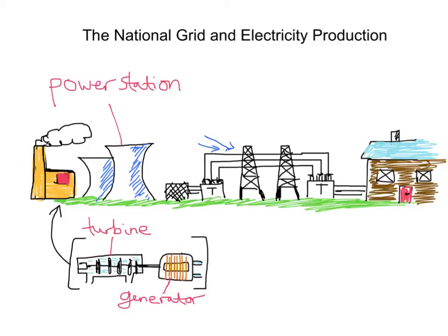Important to note: electricity is supplied to consumers — you and I — through this national grid, but it's done at a very high voltage, and that's to reduce energy losses during transmission. Going from the power station, our point of origin, to our home, we could lose a lot of energy during that transmission. So we need to have a very high voltage.